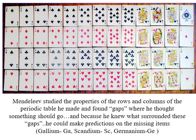Mendeleev studied the properties and the rows and columns of his version of the periodic table, and when he did this, he found gaps where he thought something should go — that there should be some element. Because he knew what surrounded these elements both horizontally and vertically, he said, 'It's got to fit between this and this and between this and this.' That's how he actually predicted the elements gallium, scandium, and germanium before they were actually discovered and described in the laboratory.